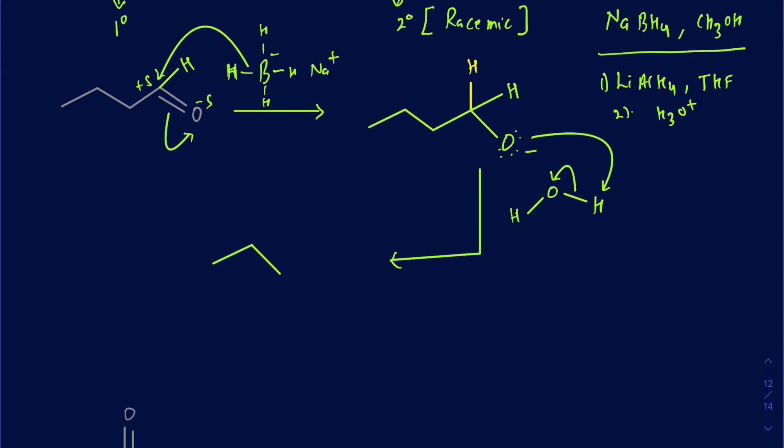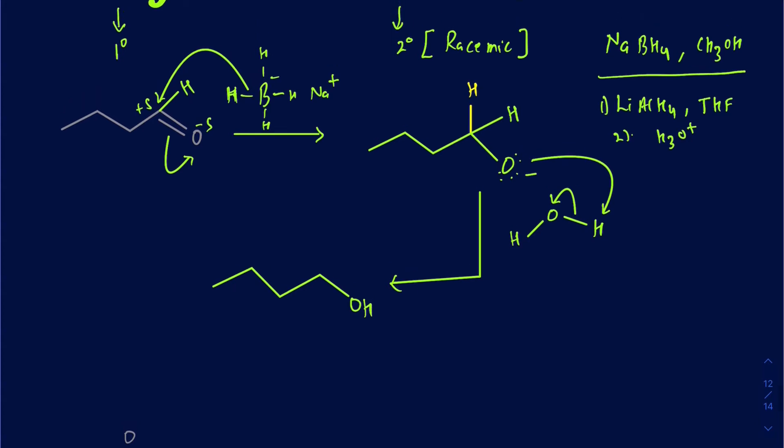The result is a primary alcohol. You can also use dilute acid in the second step as a workup to make sure all the alcohol is protonated. This is the typical mechanism for the reduction of an aldehyde with NaBH4.